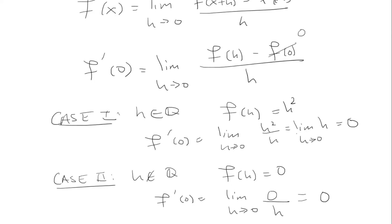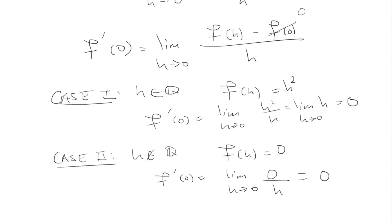So in these two cases, we find the derivative to be 0. Therefore, the derivative exists and is 0.